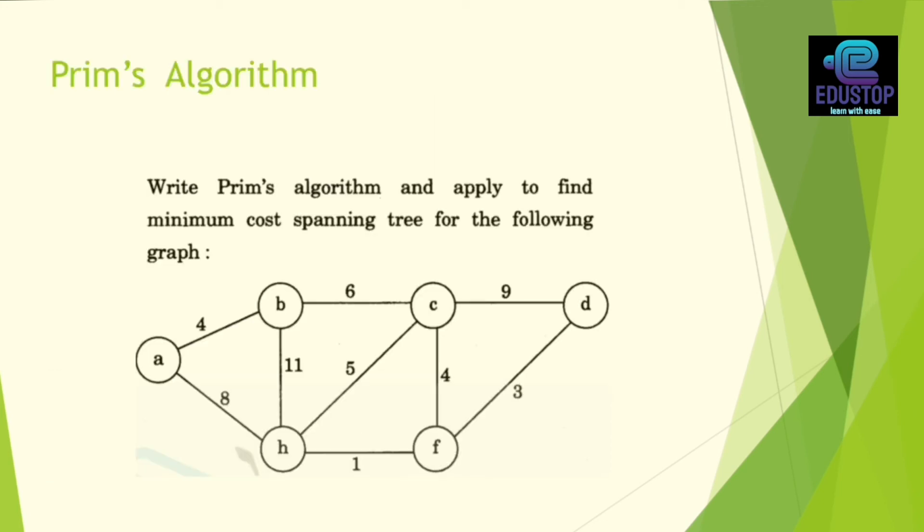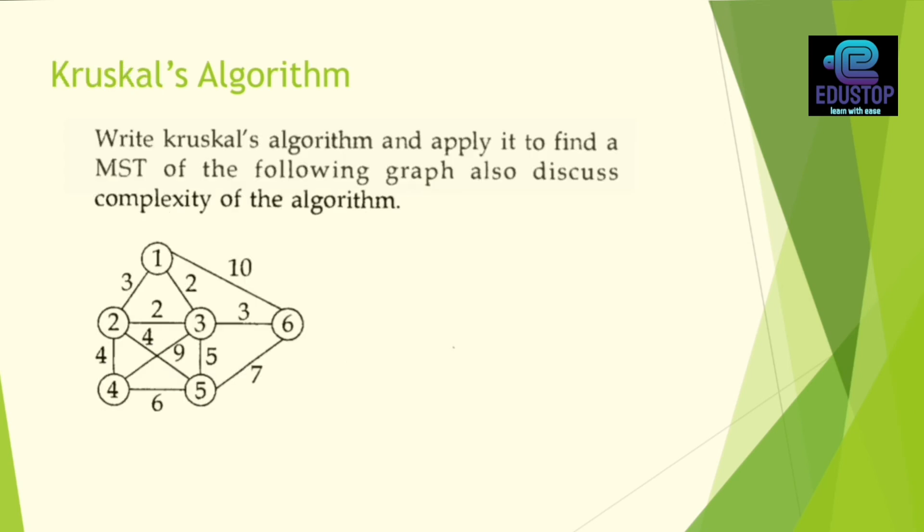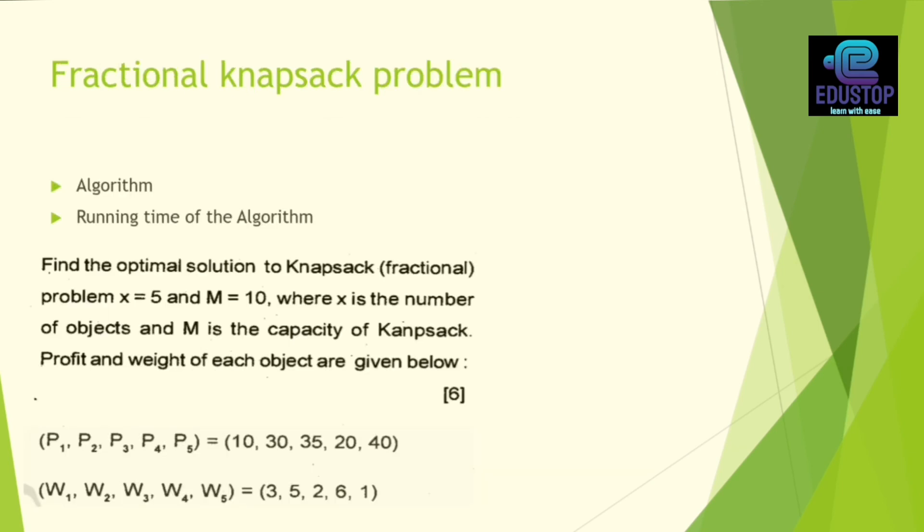Next, Prim's algorithm is very important. Prim's algorithm is also a question that you have to write Prim's algorithm and this spanning tree is given. You have to apply Prim's algorithm. Kruskal's algorithm is our next question. For both MCST solve the problem, one will come in Prim's and another will come in Kruskal's.